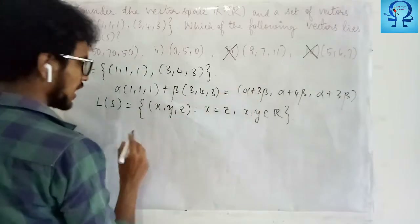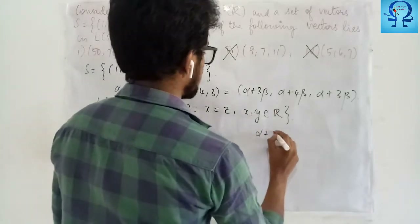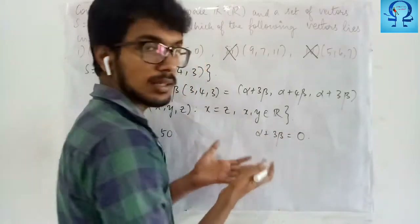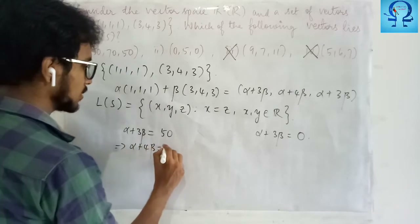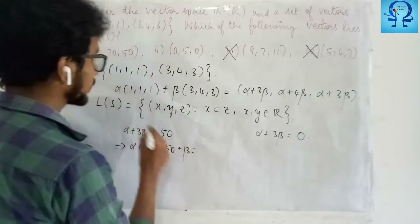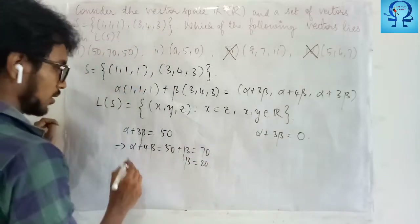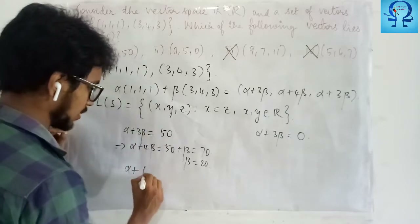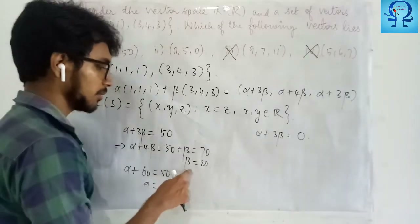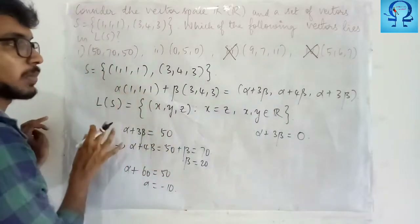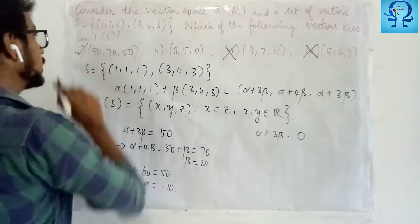For the first candidate, we have alpha plus 3 beta equals 50, and alpha plus 3 beta equals 50 in the last entry. So alpha plus 4 beta equals 70, which means beta equals 20. Then alpha plus 3 times 20 equals 50, which gives alpha equals minus 10. When alpha equals minus 10 and beta equals 20, it satisfies the requirements to be in the span. Therefore, the scalars are minus 10 and 20, so this vector is in the span.